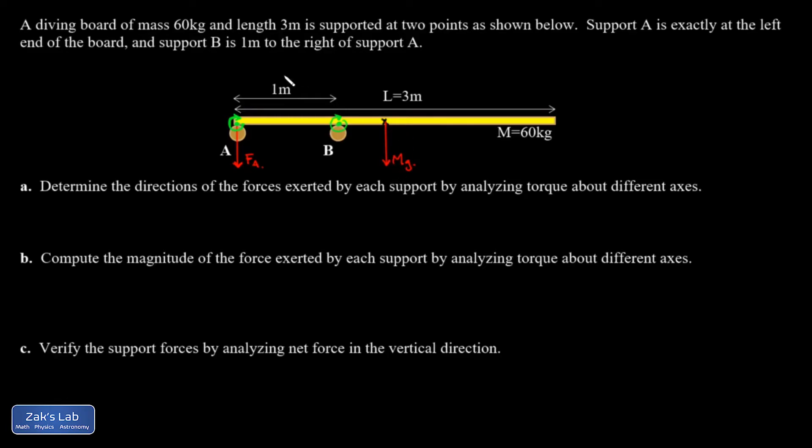Let's analyze torques about that. Well, gravity is exerting a clockwise torque through this lever arm of one and a half meters with respect to that rotation axis. So B must be exerting a counterclockwise torque. And that means the force exerted by B must be upward on the diving board. So there's part A.